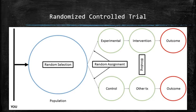Third, the participants must be randomly assigned to treatment or control groups. It is critical that nobody, not the researchers, not the people in the experiment, can participate in the decision about which group people fall into. Some kind of randomization procedure is used to put people into groups: flipping a coin, using a computer, or some other method.